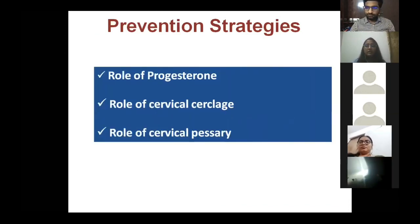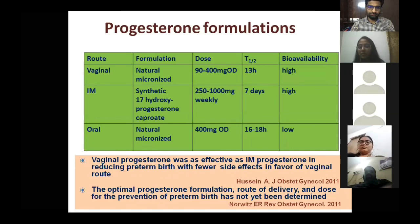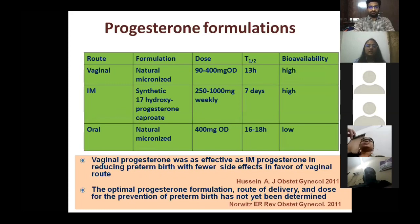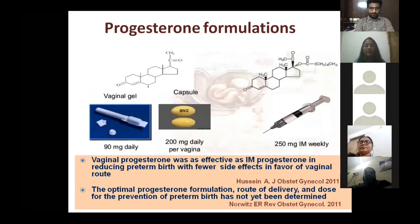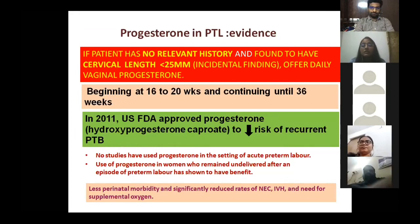The two major interventions for prevention are progesterone and cervical cerclage. For progesterone, formulations include vaginal, intramuscular, and oral routes. Vaginal and oral preparations use natural micronized progesterone; for IM, synthetic 17-hydroxyprogesterone caproate is used. Vaginal and IM have similar efficacy, but the optimal route and dose for prevention of preterm birth has not yet been definitively determined — options include gel, capsule, or weekly injections.